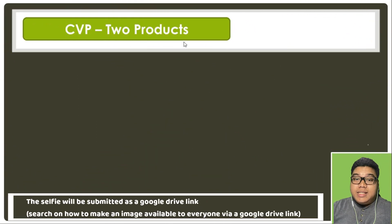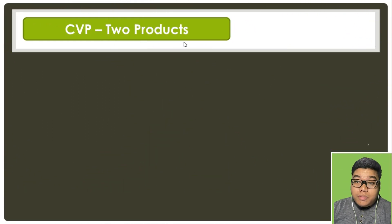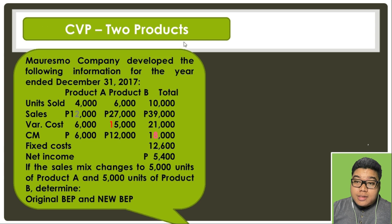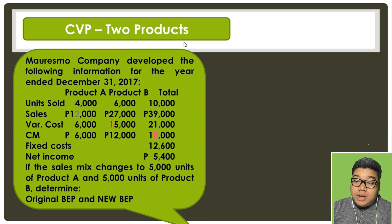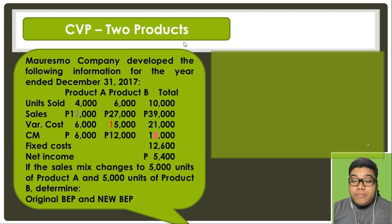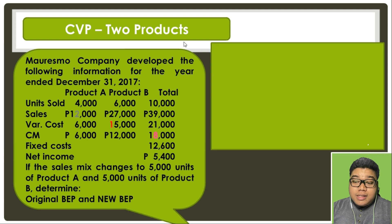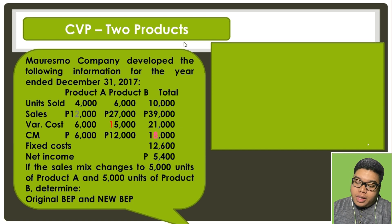Now let's try to answer this problem — CVP of two products. Mauresmo company developed the following information for the year ended December 31, 2017. We have data for product A and product B in total. If the sales mix changes to 5,000 units for product A and 5,000 units for product B, determine the original break-even point and the new break-even point.